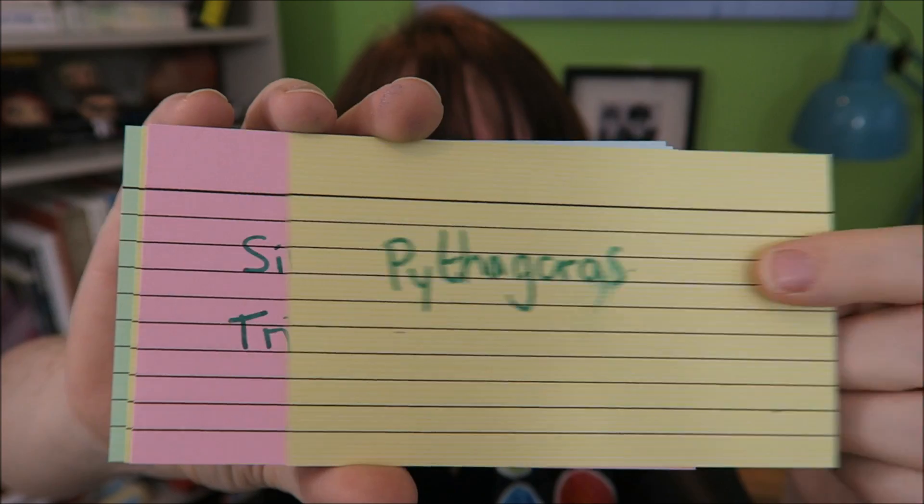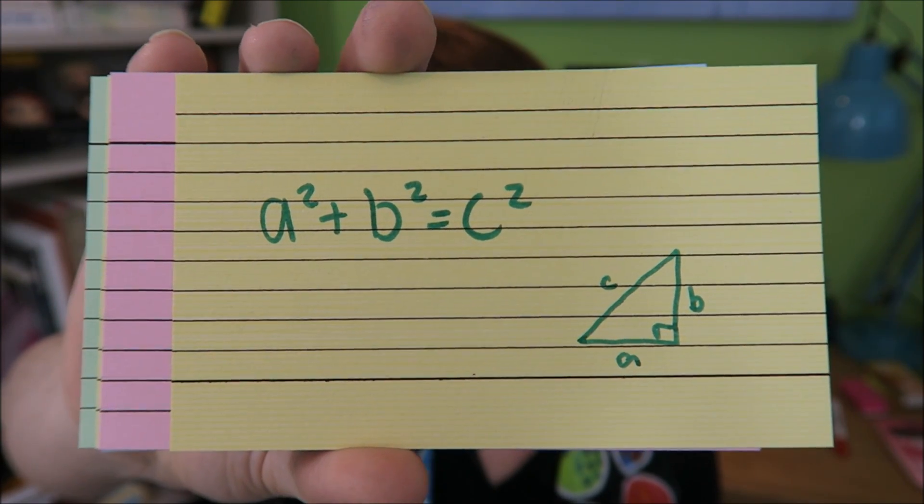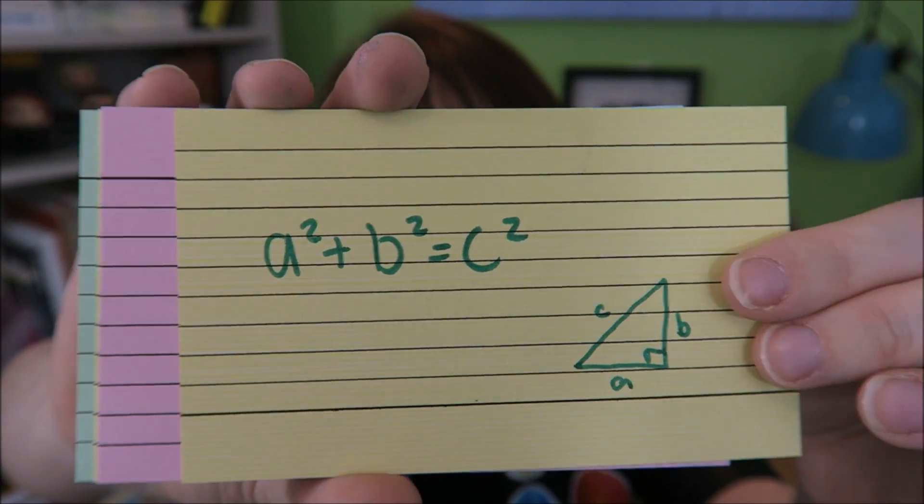Pythagoras. Love Pythagoras. A squared plus B squared equals C squared. Where C is your hypotenuse, the long one opposite the right angle.